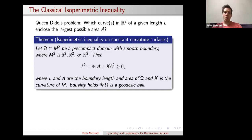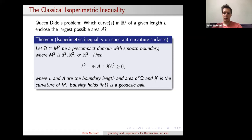We have equality if and only if the domain is a ball. If we work in one of the other constant curvature model spaces — the round two-sphere or the hyperbolic plane — this inequality still holds if we modify the statement and add the term K times A squared, where K is the Gaussian curvature: plus one for the sphere or minus one for the hyperbolic plane.